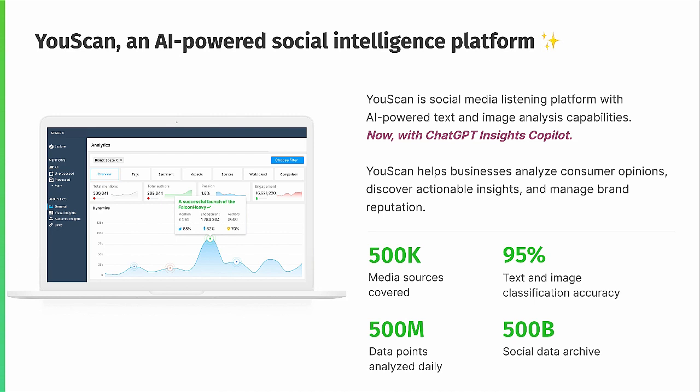Speaking of data sources, Uscan covers popular social networks such as Twitter — I still can't get used to its new X name — Instagram, TikTok, YouTube, Reddit, and LinkedIn. We also collect data from blogs, forums, and product reviews from sites like Amazon and others.